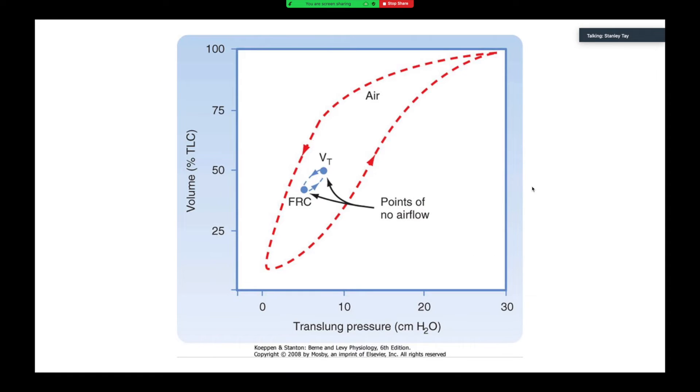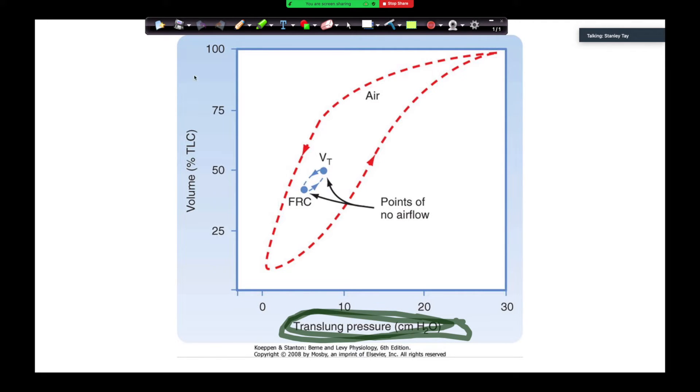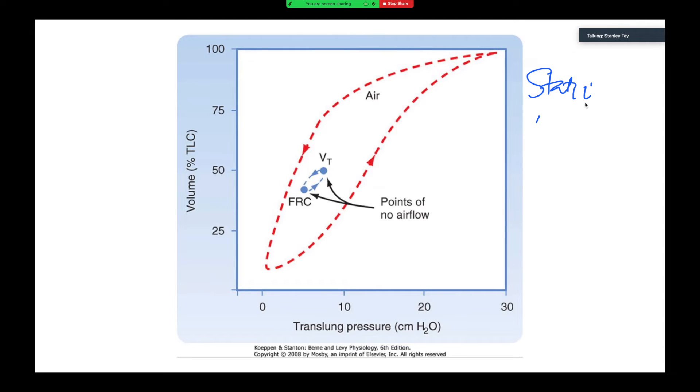The next one here is the one from Bernan-Levy. So a couple of things here. The key concepts are that a static compliance curve is drawn from residual volume to total lung capacity. And with a dynamic compliance curve, it's often drawn from FRC to tidal volume. So this is static and this is of the lung. Now you're going to ask me, how do I know? So one, remember what I said, look at the y-axis. So we've got volume percentage to TLC. So really, I know that this is static, looking at the y-axis.